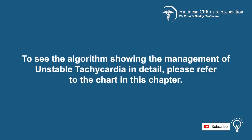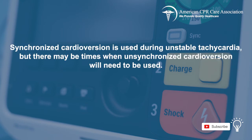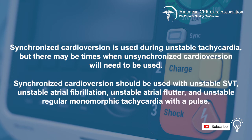To see the algorithm showing the management of unstable tachycardia in detail, please refer to the chart in this chapter. Now let's talk about cardioversion. Synchronized cardioversion is used during unstable tachycardia, but there may be times when unsynchronized cardioversion will need to be used. Synchronized cardioversion should be used with unstable SVT, unstable atrial fibrillation, unstable atrial flutter, and unstable regular monomorphic tachycardia with a pulse.